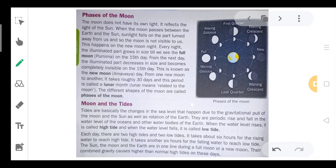Hello students, today we are going to learn about the moon and its phases. As we know, the moon does not have its own light. It reflects the sun's light. When the moon passes between the earth and the sun, sunlight falls on the part turned away from us, and so the moon is not visible to us.